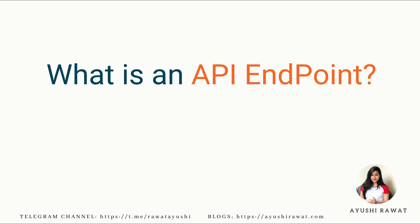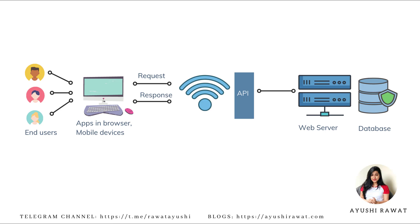Now, what is an API endpoint? API sets the rules for communication. In the case of the restaurant example, you do not need to know the food recipe or anything that goes inside the kitchen. You interact with the waiter and he establishes the connectivity between you and the kitchen. So in this scenario, the waiter is your API endpoint.